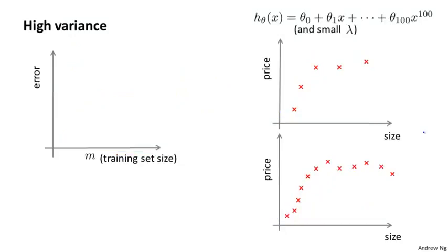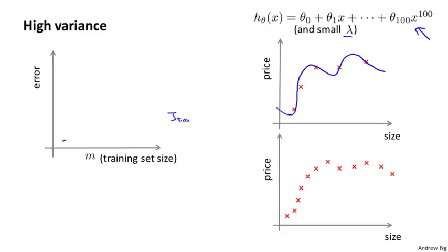Next, let's look at a learning algorithm that may have high variance. If you have a very small training set and you're fitting a very high-order polynomial — a hundredth-degree polynomial — with a fairly small value of lambda, you'll end up fitting this data very well with a function that overfits. So if the training set size is small, J_train will be small. As the training set size increases, J_train increases slightly because it becomes harder to fit the training set perfectly, but the training error will still be pretty low.